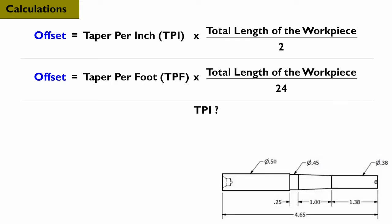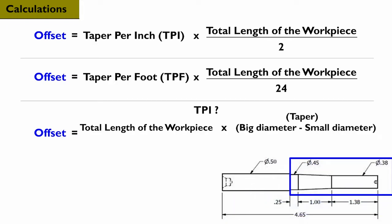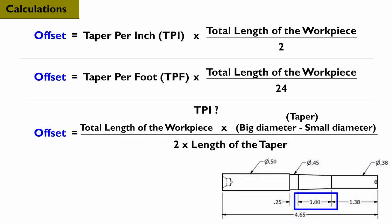If the workpiece has a short taper and the TPI isn't given, you can calculate the offset by multiplying the total length of the workpiece by the difference of the big diameter of the taper minus the small diameter, and then dividing that number by 2 times the taper's total length.